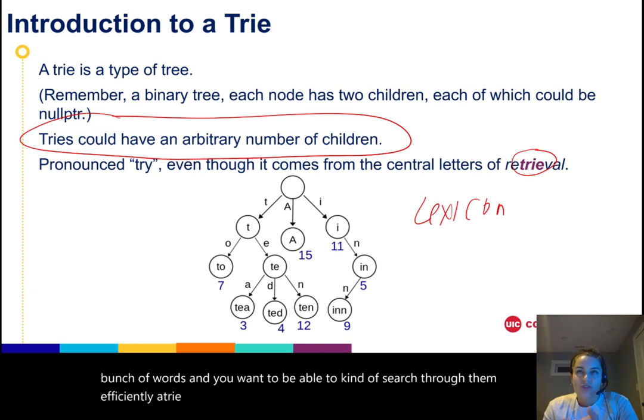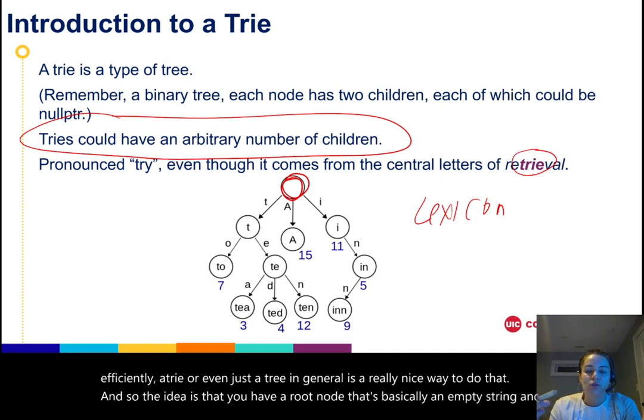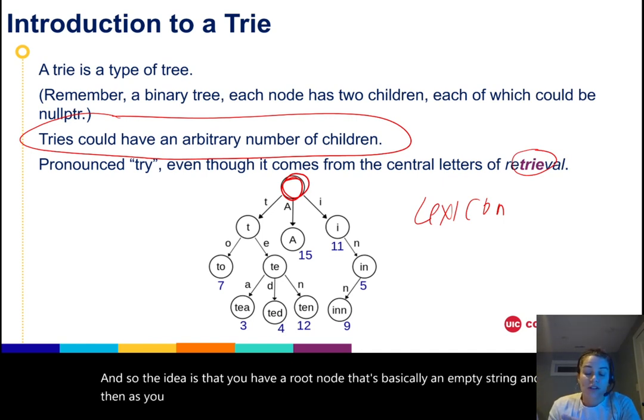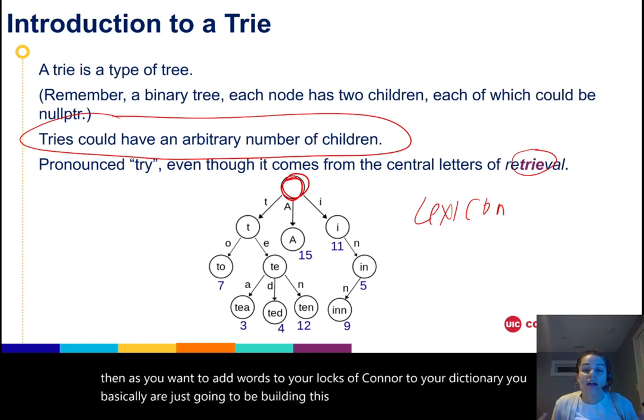The idea is that you have a root node that's basically an empty string, and then as you want to add words to your lexicon or to your dictionary, you're basically just building this gigantic tree that adds one letter at a time.